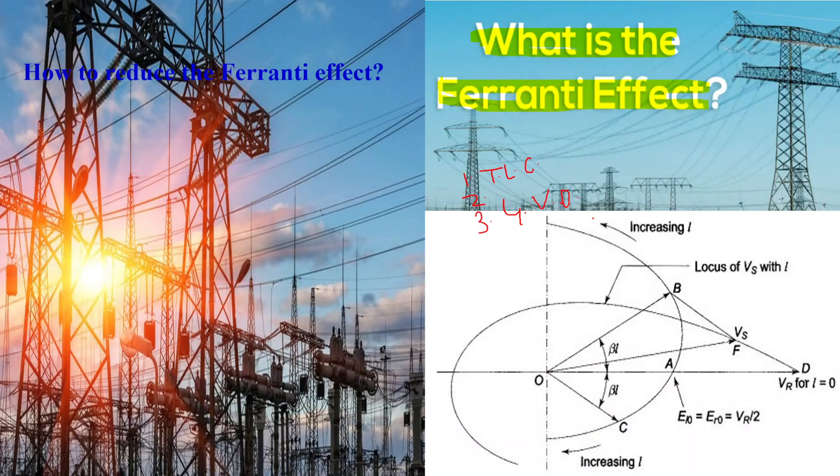Fourth, voltage drop. When AC power is transmitted through a long transmission line, the impedance of the line causes a voltage drop along its length. This voltage drop is primarily due to resistance, inductance, and capacitance of the line, collectively referred to as the impedance.